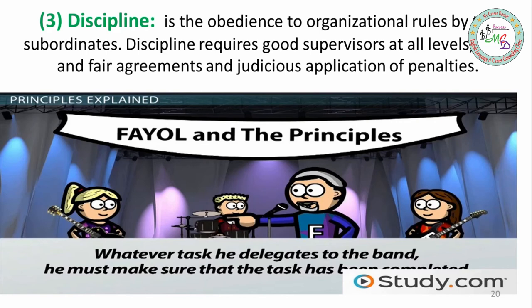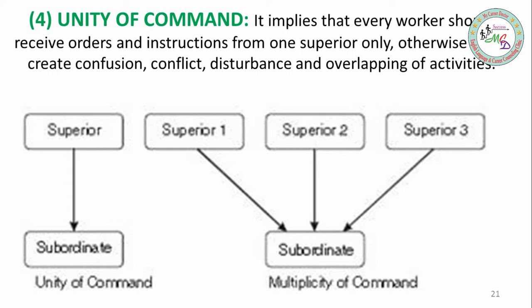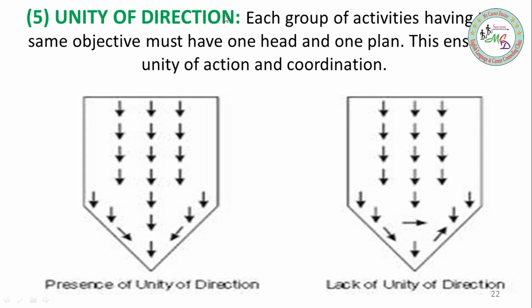Next is Unity of Command - it means that every worker should receive orders and instructions from one superior only. If multiple seniors give orders to one employee, it creates confusion, conflict, and overlapping of activities, causing delays. Fayol focused greatly on this. Next is Unity of Direction - each group of activities having the same objective must have one plan and one head. All must move in one direction to establish unity of action and coordination.